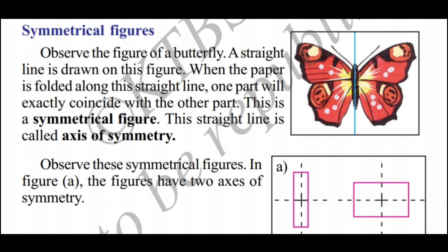The butterfly figure is called an exactly half fold — this is a symmetrical figure. These figures are symmetrical figures, and this line is the axis of symmetry.